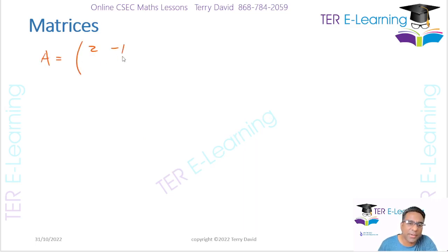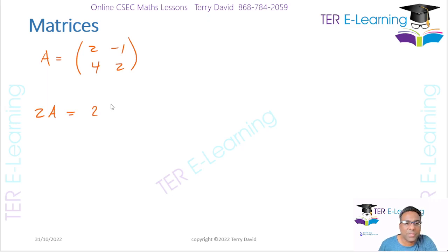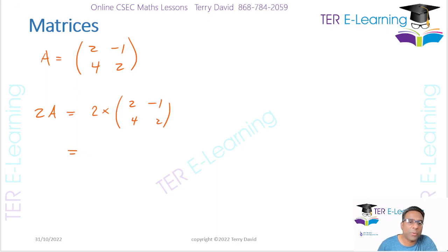For example, if I have a matrix E, and that matrix E is [2, -1; 4, 2], and I want to work out what is 2E. 2E is a scalar multiplication — that's 2 multiplied by your matrix E, which is [2, -1; 4, 2]. So all I need to do is take that 2 and multiply by every element inside of the matrix.